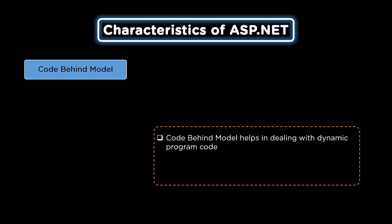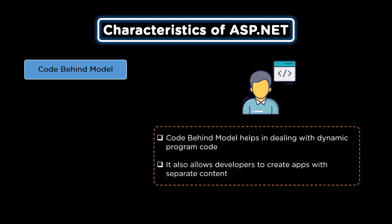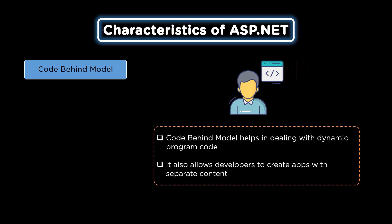Beginning with the code-behind-model characteristic. Code-behind-model helps in dealing with dynamic programming code. It also helps to place code in a separate designated script or a specific file named as mypage.aspx.cs, while the main page file is mypage.aspx. Code-behind-model also helps to create applications with different content.